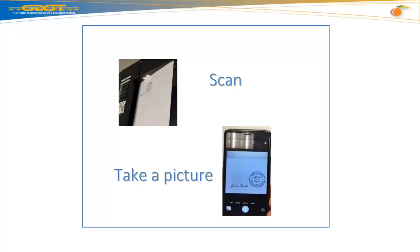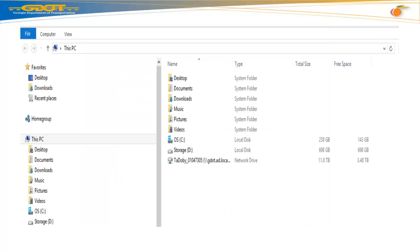First, scan or take a picture of your signature and seal file. Then save that image as a JPEG file onto your laptop or computer desktop. Next, navigate and locate your signature and seal file saved on your computer.